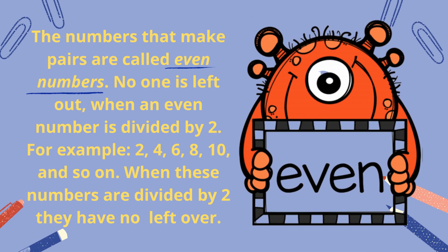On the other hand, the numbers that make pairs are called even numbers. No one is left out when an even number is divided by two. For example, two, four, six, eight, ten, and so on. When these numbers are divided by two, they have no left over.